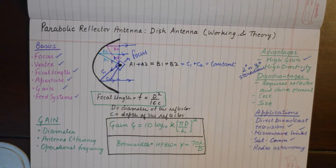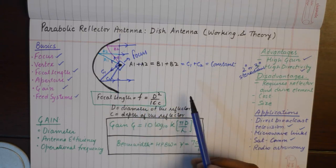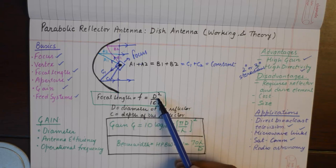Now let's talk about a few governing formulas for parabolic reflector antenna. The first is going to be the focal length. If you were to find the focal length, the formula will be d² divided by 16c.